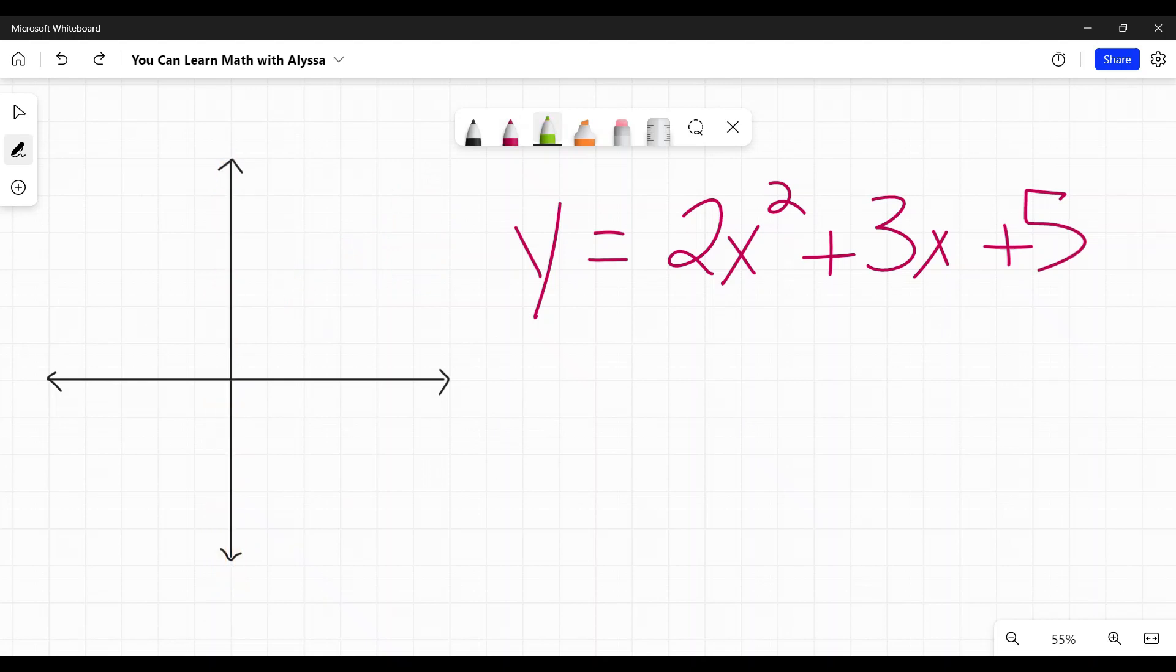So what happens if you plug a 0 in for x? Every time you do, it's going to get rid of that term. Because 0, 0 squared, 0 cubed, 0 to the fourth, 0 to whatever power is going to be 0. And any number times that 0 is going to be, you guessed it, 0. So in this case, 2 times 0 squared, 0 squared is 0, so 2 times 0 is 0. Over here, 3 times 0 is 0. And so to bring everything down here, I get 0 plus 0 plus 5. Oh, that's 5.